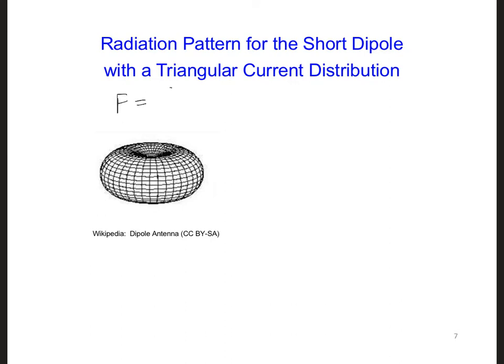To solve for F, we take S divided by S max, the magnitude of S, which gives us sine squared theta. Now we can plot what's called a radiation pattern. Here's one. To plot the radiation pattern, the antenna is centered right at the origin.